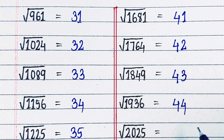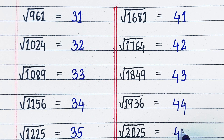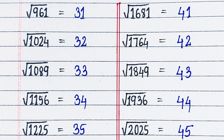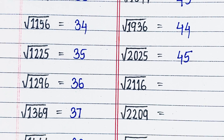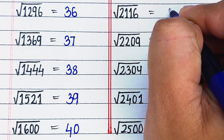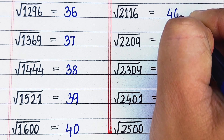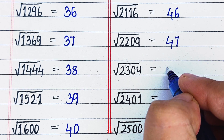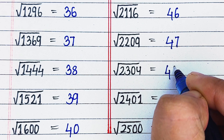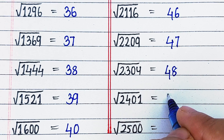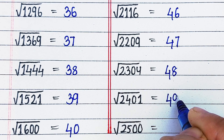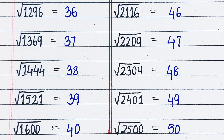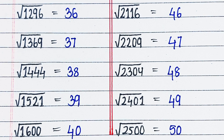Square root of 1936 is 44. Square root of 2025 is 45. Square root of 2116 is 46. Square root of 2209 is 47. Square root of 2304 is 48. Square root of 2401 is 49. Square root of 2500 is 50.